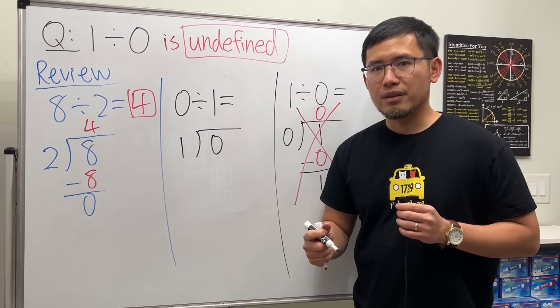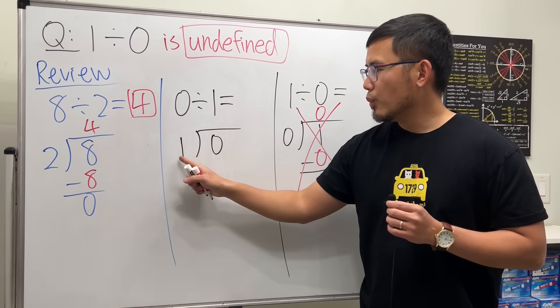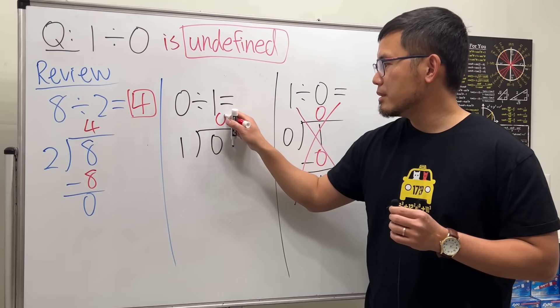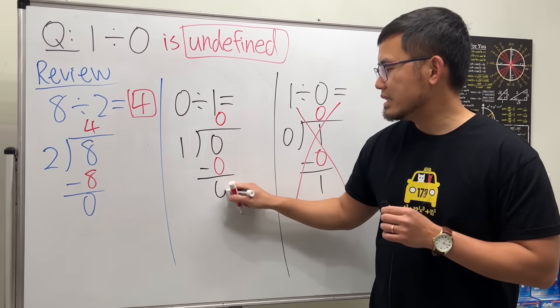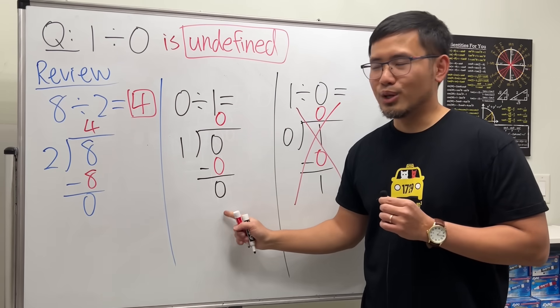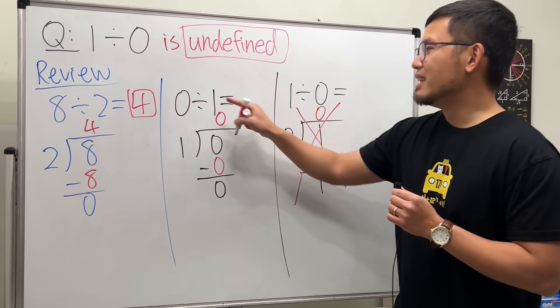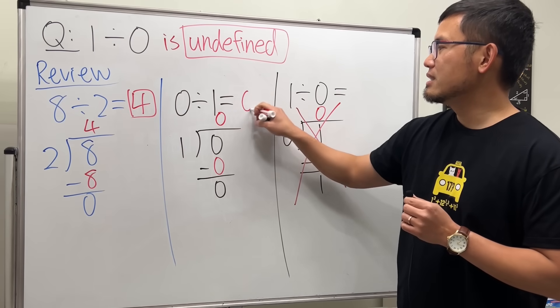In this case, can we do something? Yes. 1 goes into 0, 0 times. 0 times 1 is 0. 0 minus 0 is 0. When you see the 0, this right here was the answer, 0 divided by 1 is 0.